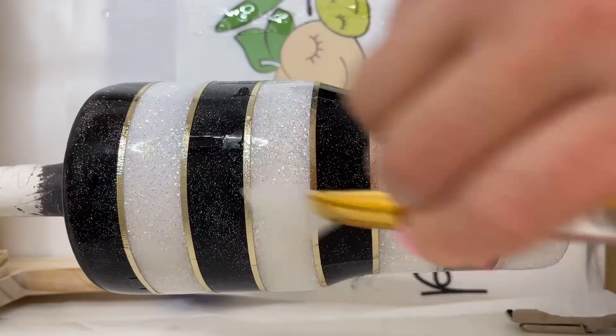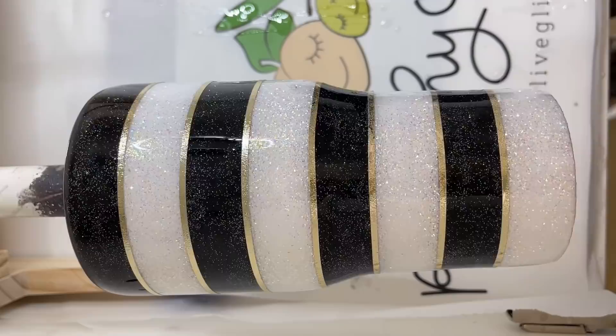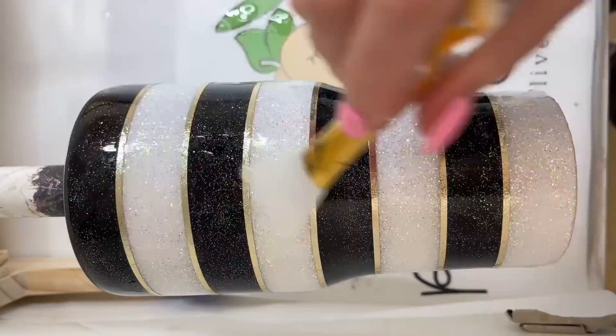This is just a water-based urethane sealer that I'm going to apply to our cup really quickly to ensure that I don't have any lifting with my vinyl lines. I also like using this product anytime I've had a lot of goings on on the surface of a cup.